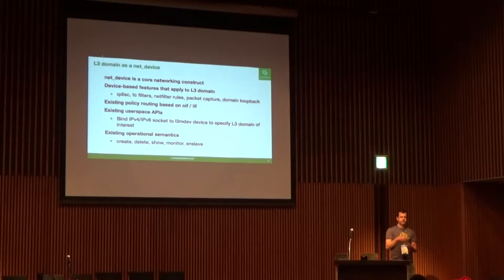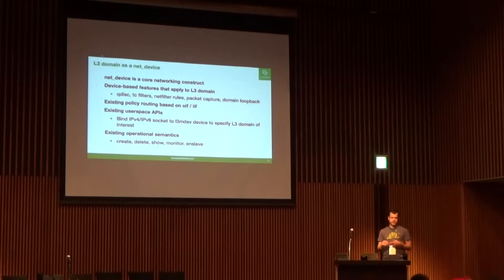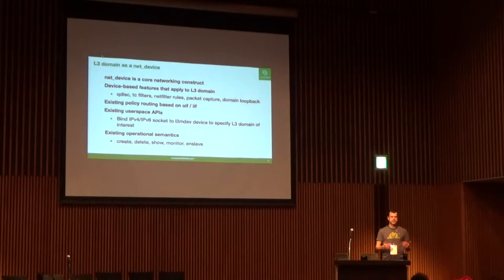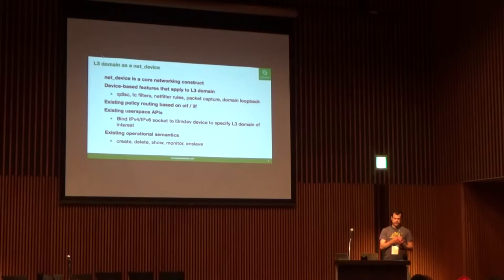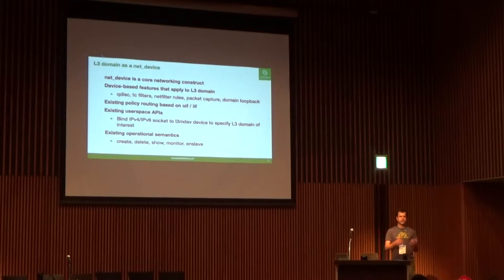By creating a NET device for an L3 domain, we now have a place to anchor L3 domain local loopback addresses, which are very important for L3 routing protocols. Also, by using the NET device construct, we can leverage existing code paths in the kernel — for example, FIB rules based on OIF or IIF. The socket API uses socket-bound devices so an application can specify which domain is of interest. And existing IP link show commands will list out L3 domains as well, so operationally users don't have to learn new semantics.